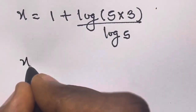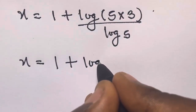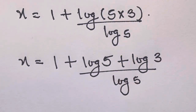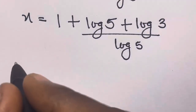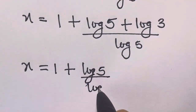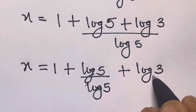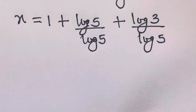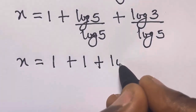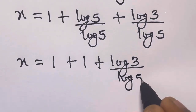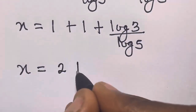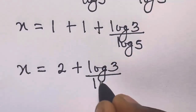Applying the product rule again, we have x equals 1 plus log 5 plus log 3, all divided by log 5. Splitting the fraction: log 5 divided by log 5 equals 1, so we get x equals 1 plus 1 plus log 3 divided by log 5, which gives us x equals 2 plus log 3 divided by log 5.